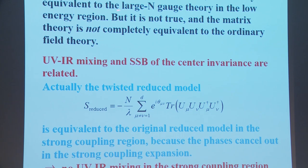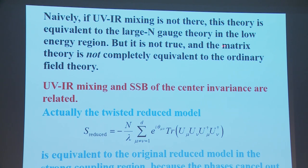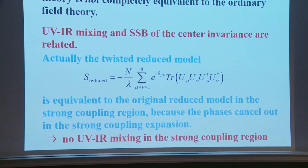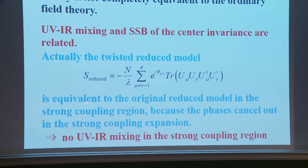Naively, if UV-IR mixing is absent, this theory is equivalent to the large-N gauge theory in the low energy region. But it is not true — the matrix model is not completely equivalent to ordinary field theory. UV-IR mixing and SSB of the center invariance are related. The twisted reduced model is equivalent to the original reduced model in the strong coupling region because the phases cancel out in the strong coupling expansion, suggesting the absence of UV-IR mixing in the strong coupling region.